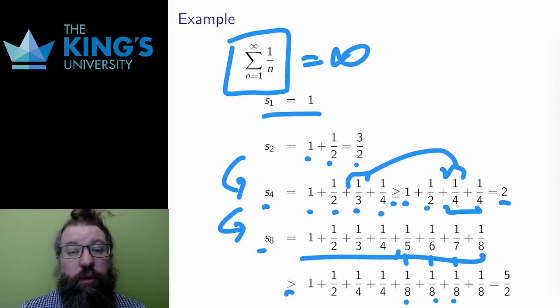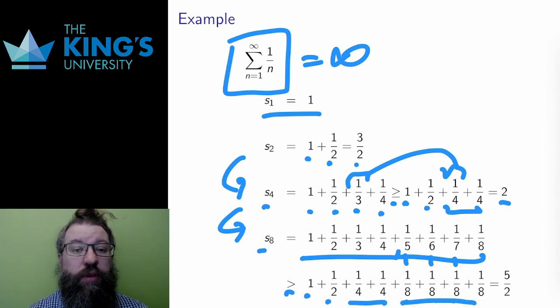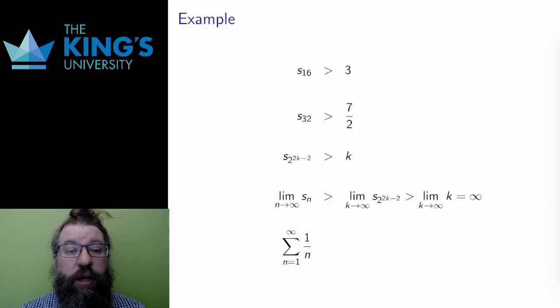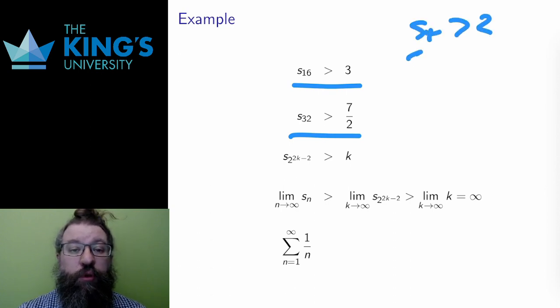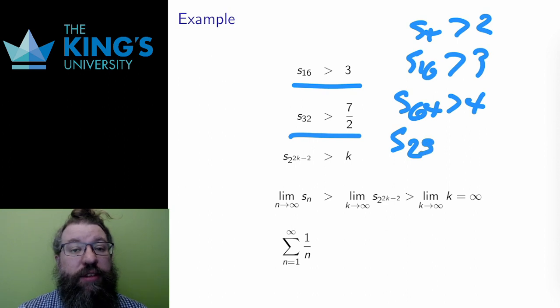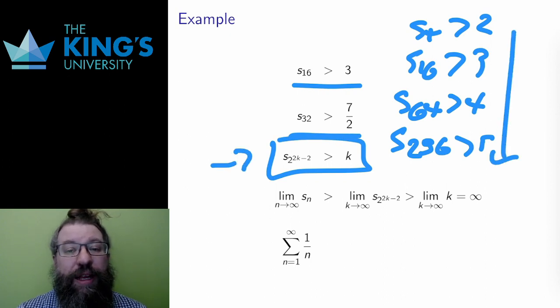However, compared to the previous S4, I've now added 4 eighths. Well, that's another half. So this sums to 5 halves. I can continue this way. S16, by replacing most of the new terms with 1 over 16, is larger than 3. I've added another half. 5 halves plus 1 half is 3. Similarly, S32 is larger than 7 halves. S64 is larger than 4, and so on. I had S4 was larger than 2. S16 was larger than 3. S64 was larger than 4. Every second power of 2, 4, 16, 64, and so on, is larger than the next whole number. I can write this as S2 to the 2k minus 2. That partial sum is larger than k, if I sort of line up the indices properly, and want to make it a formal relationship.